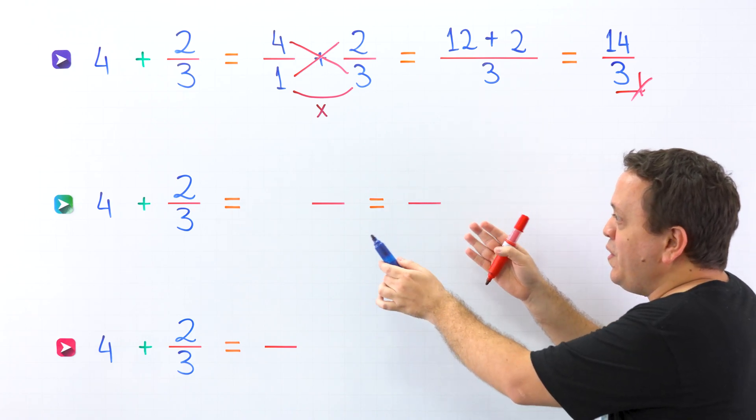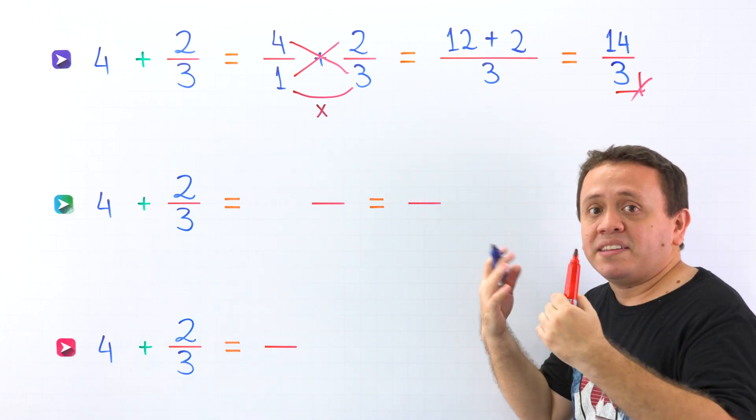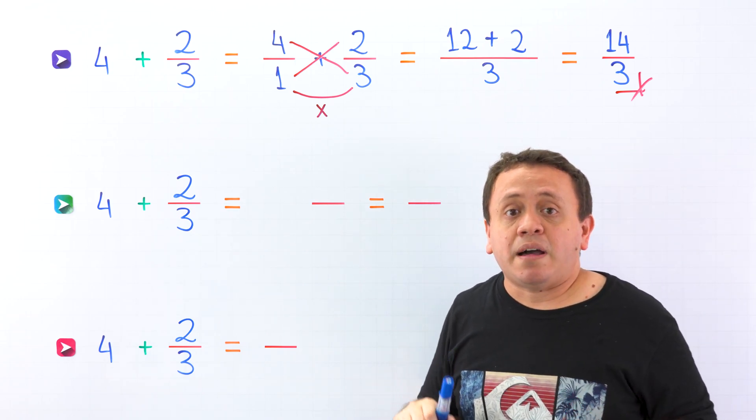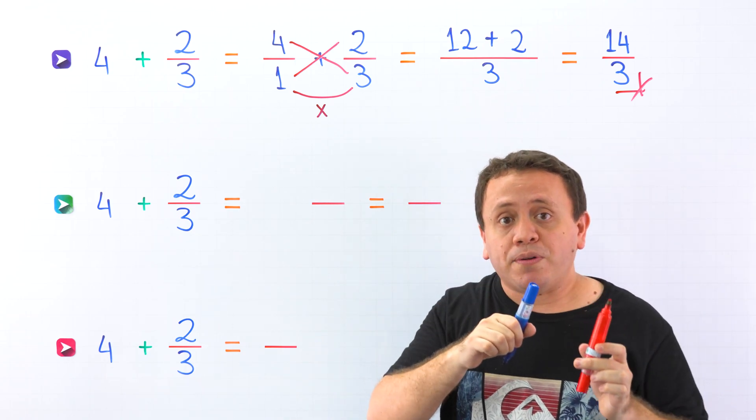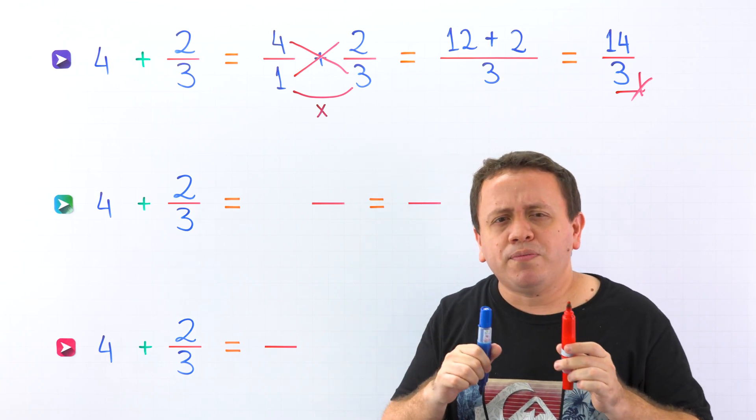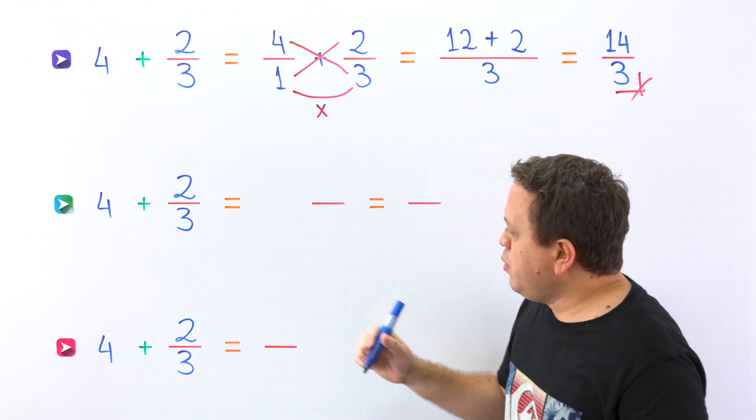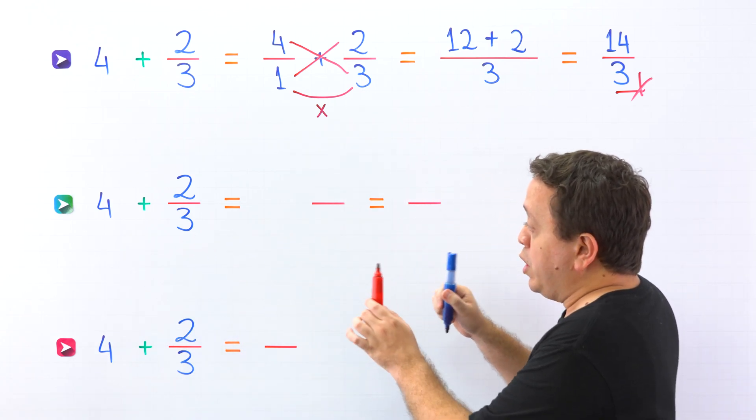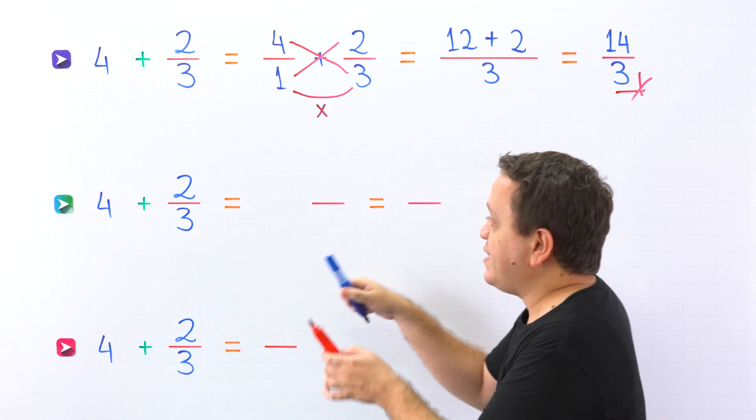Perfect. Let's move on to the second method. This is the mixed number method. At this point, we should remember that a mixed number is the sum of a whole number and a proper fraction. Wait a minute. Here we have the sum of a whole number and a proper fraction, so we could rewrite this addition as a mixed number.